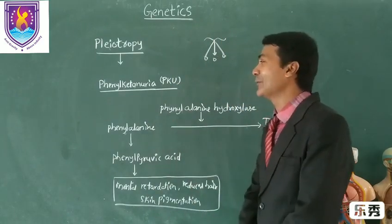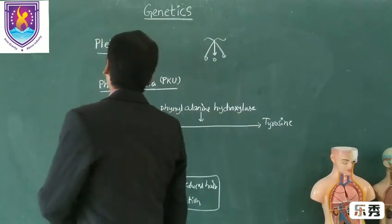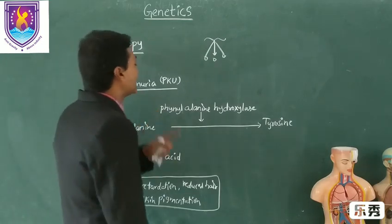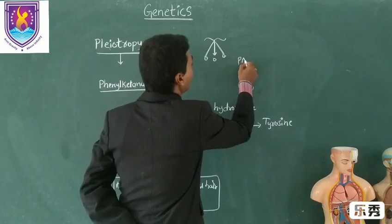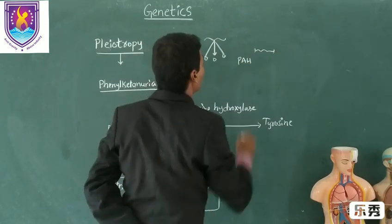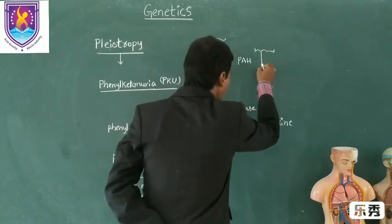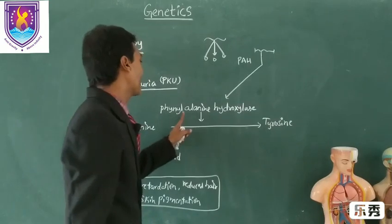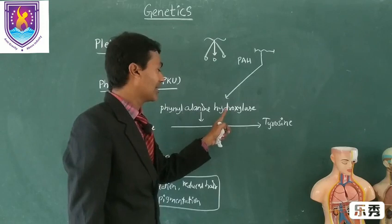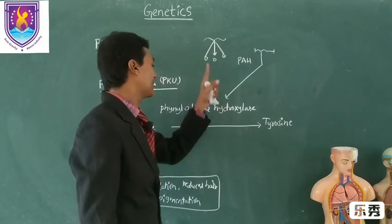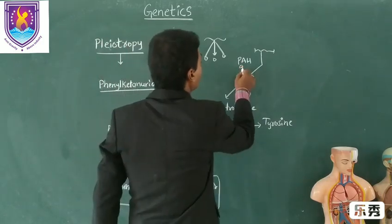That example is phenylketonuria, which is a disorder in our body. PKU is one of the disorders that happens in our body. A gene called the phenylalanine hydroxylase gene — the PAH gene — expresses the enzyme phenylalanine hydroxylase, which controls a specific phenotypic trait.